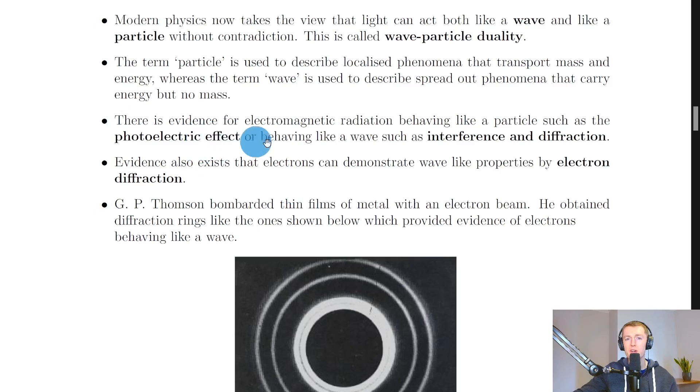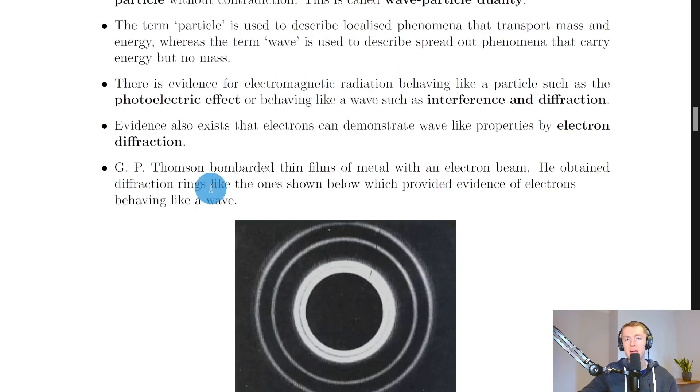We have evidence for electromagnetic radiation behaving like a particle, such as the photoelectric effect which was seen in a previous video, or for electromagnetic radiation behaving like a wave, such as interference and diffraction. One type of this evidence that we'll look at specifically is called electron diffraction. Evidence also exists that electrons can demonstrate wave-like properties by electron diffraction, which in general sounds pretty weird, but we're going to look at how experimental observations have shown that electrons, i.e. particles, have wave-like behaviour.